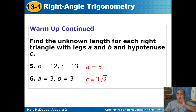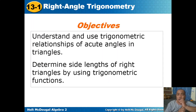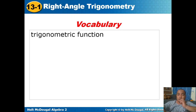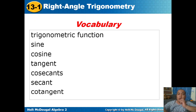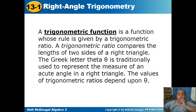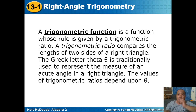Our objectives are to understand and use trigonometric relationships of acute angles in triangles, and to determine side lengths of right triangles using trigonometric functions. Key vocabulary: trigonometric function — a function whose rule is given by a trigonometric ratio. Trigonometric ratio — compares the lengths of two sides of a right triangle. The Greek letter theta is traditionally used to represent an acute angle, and the values of trigonometric ratios depend upon theta.